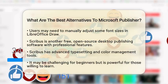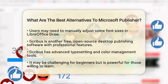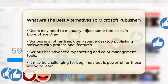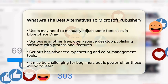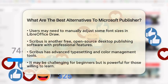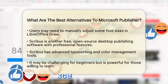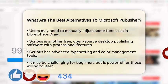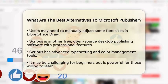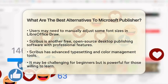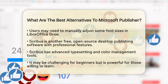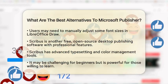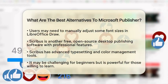Next, we have Scribus. This is another free and open source desktop publishing software that offers professional-grade features. Scribus is known for its advanced typesetting and color management tools. It can be a bit challenging for beginners, but it is highly capable for those willing to learn. It also supports importing Microsoft Publisher files, which can be a huge plus for users transitioning from Publisher.